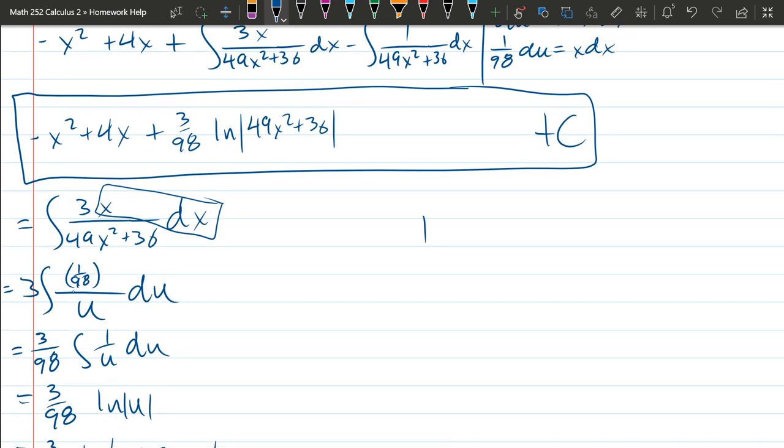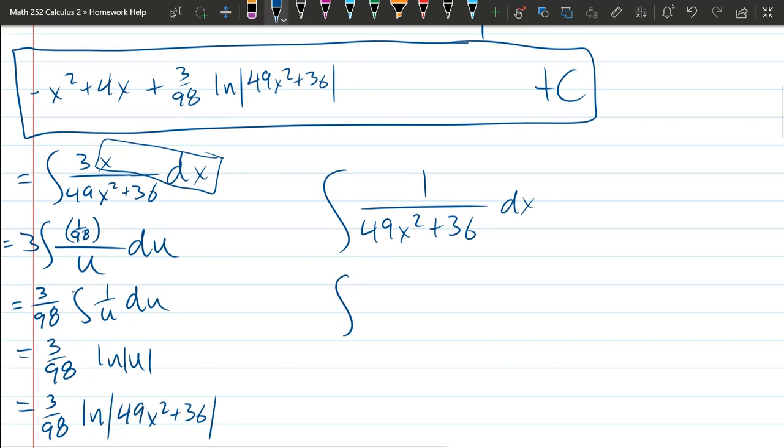So last up, integral 1 over 49x squared plus 36 dx. Let's rewrite this a little bit. And I'm going to let w, I can't use u again, u is already in use, so I'm going to use 7x. dw is 7 dx. So why did I use this? We have 7x whole thing squared plus 6 squared dx. This should look familiar and we're going to have to go over to the book.